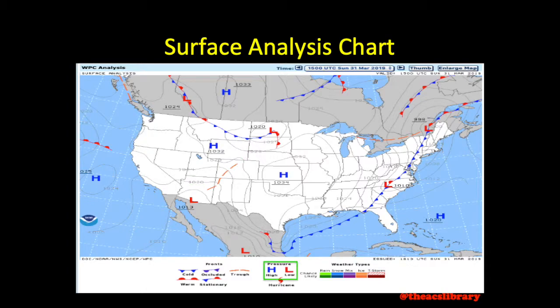High and low pressure system centers are depicted by a blue H or a red L. The center of a high pressure system is typically the highest pressure in the system, and the low center is typically the lowest pressure as well. Each is labeled with its pressure in millibars and is underlined in darker font. Here, we have the center of a low pressure system at 1020 millibars, and the center of a high pressure system at 1034.